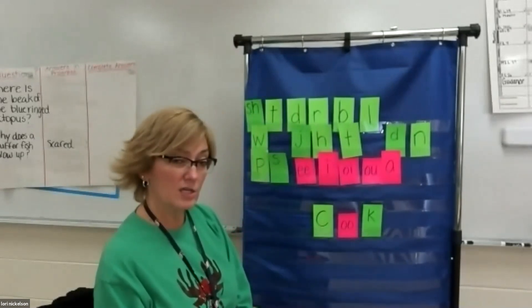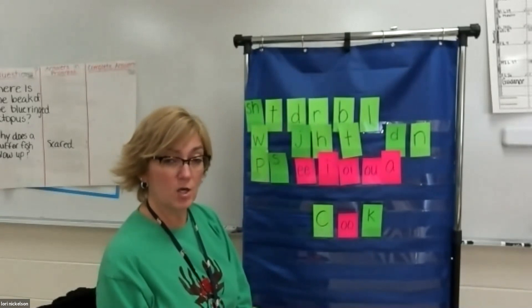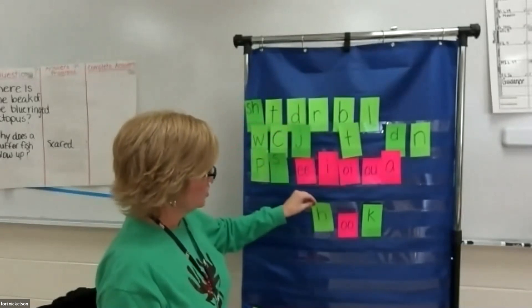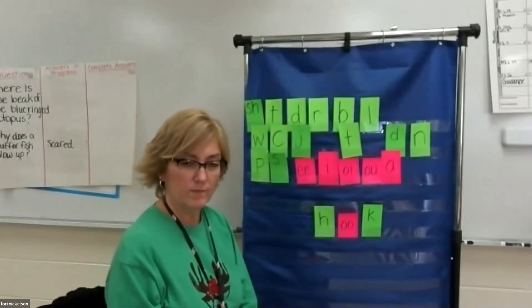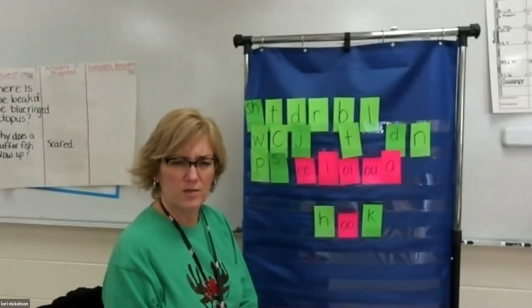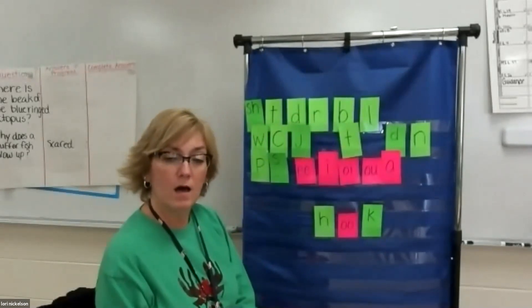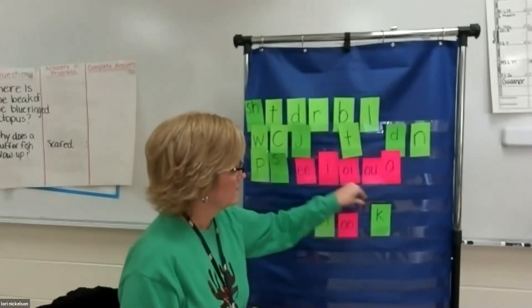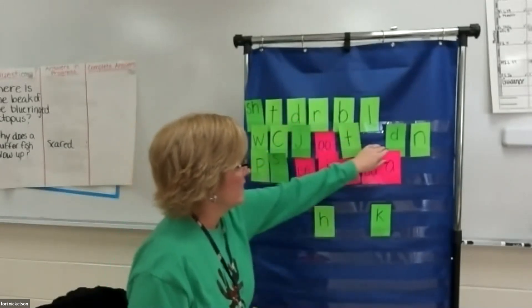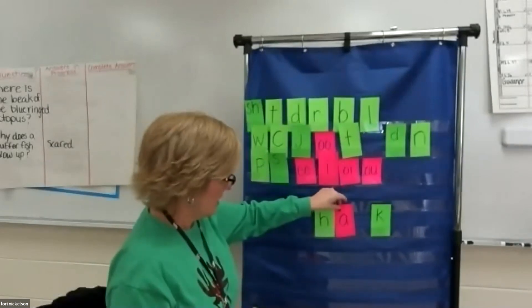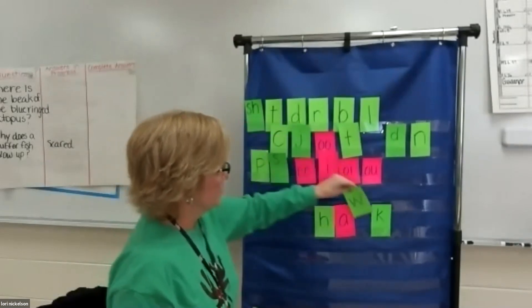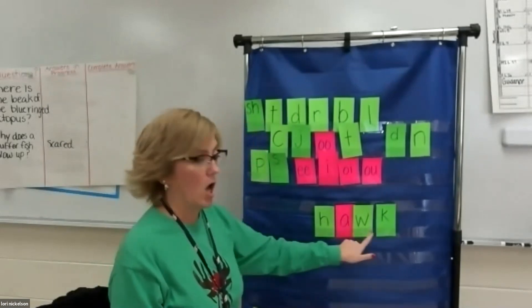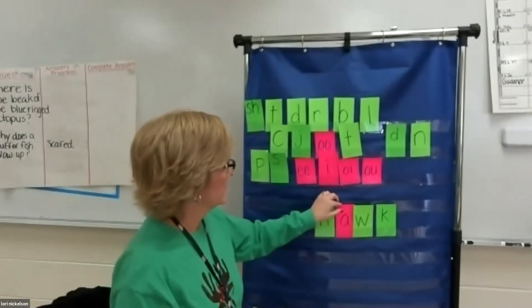Well, if I can make cook, I can also make hook. I can replace the C with an H, and now I have hook. What if I wanted to make the word hawk? Hawk. What makes the aw sound? We know it has to have an A, and a W. Hawk. H-A-W-K spells hawk. Awesome. All right. So let me replace these back up here.